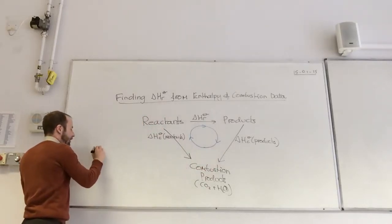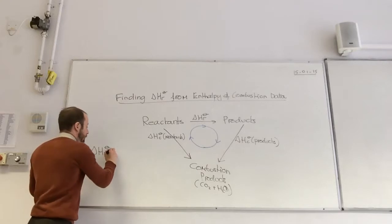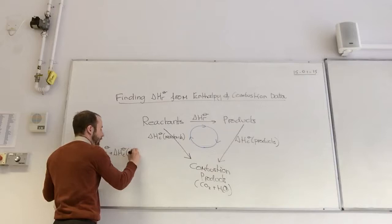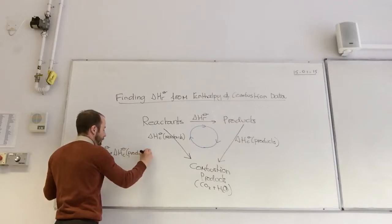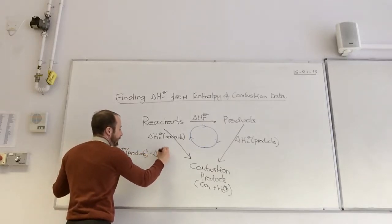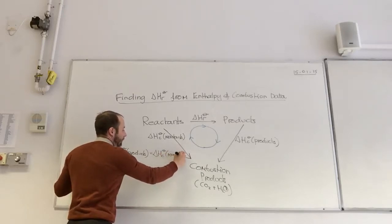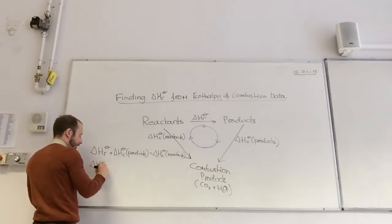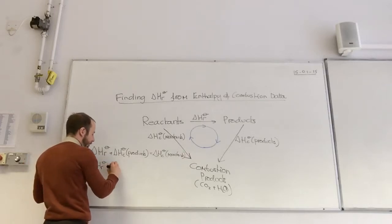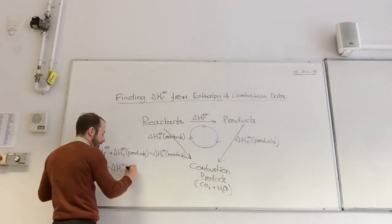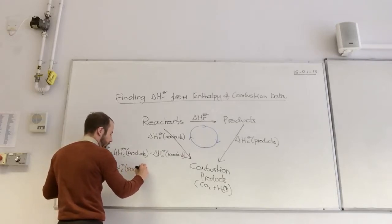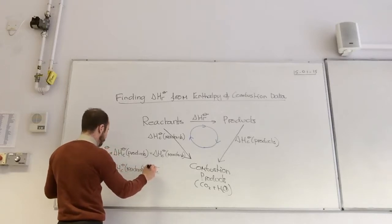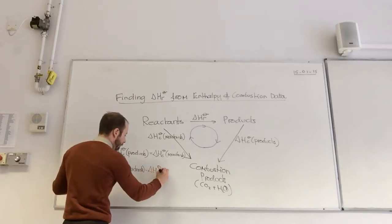Two arrows go the same way. The arrows go the same way are this one and that one there. So, delta HR standard plus delta HC for products is equal to delta HC standard for reactants. Normally, you want to find this if you rearrange that. Delta HR is equal to delta HC for my reactants minus delta HC for products.